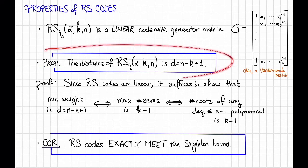A corollary of this proposition is that Reed-Solomon codes exactly meet the singleton bound. Remember from a previous video that the singleton bound said that the distance D was always at most N minus K plus 1 for any code. And now we see that Reed-Solomon codes exactly achieve that. Pretty cool.